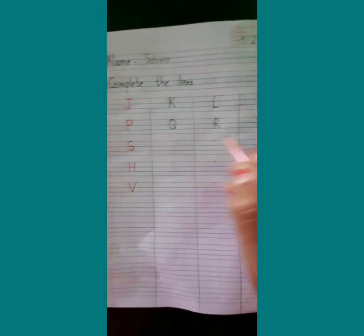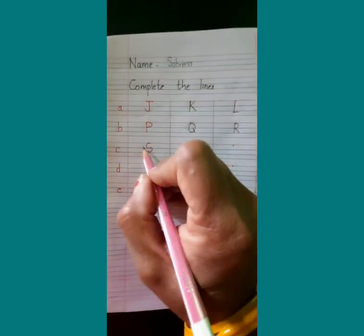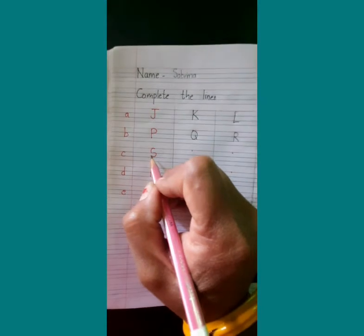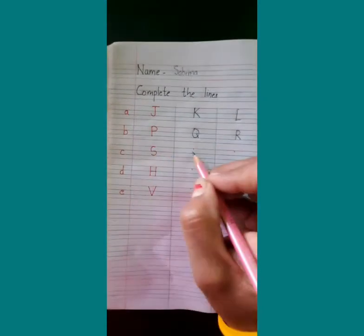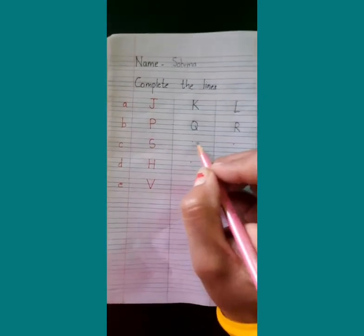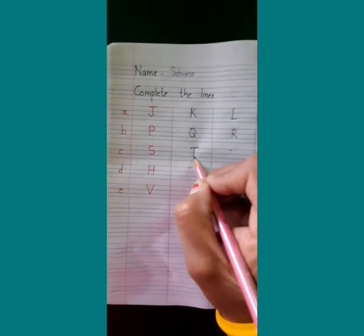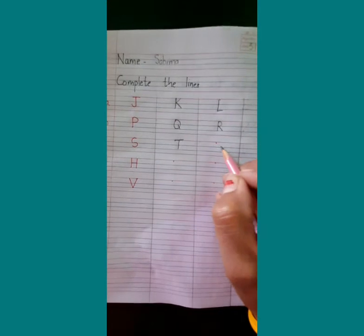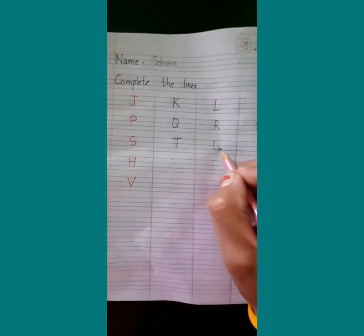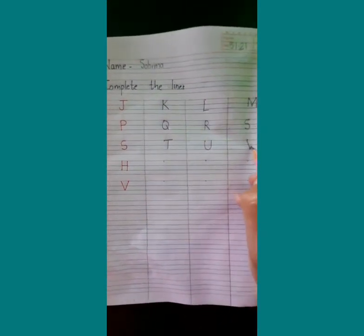Now children, we will say what letter is this? S. After S children, T. After T children, U. After U children, V.